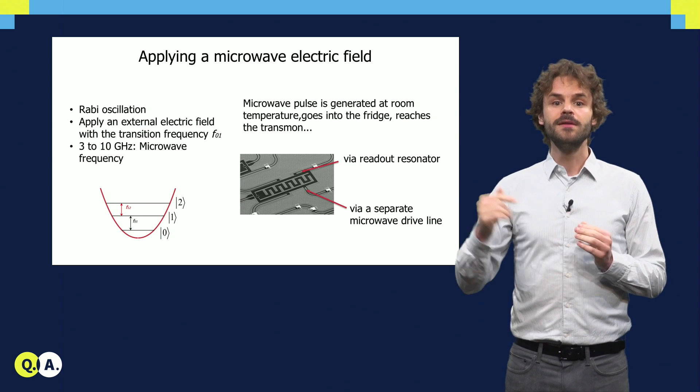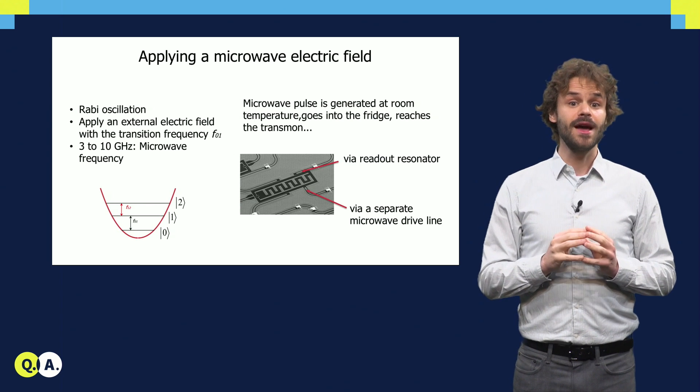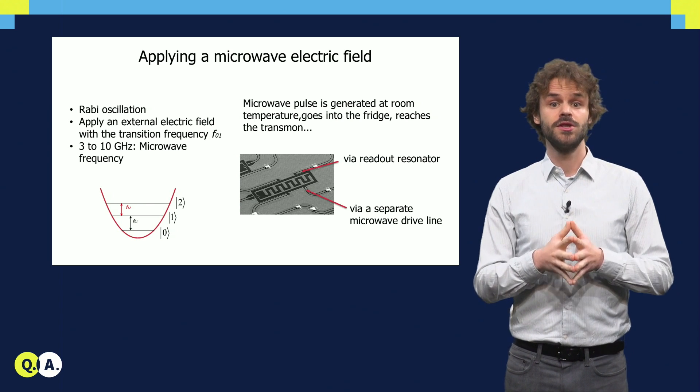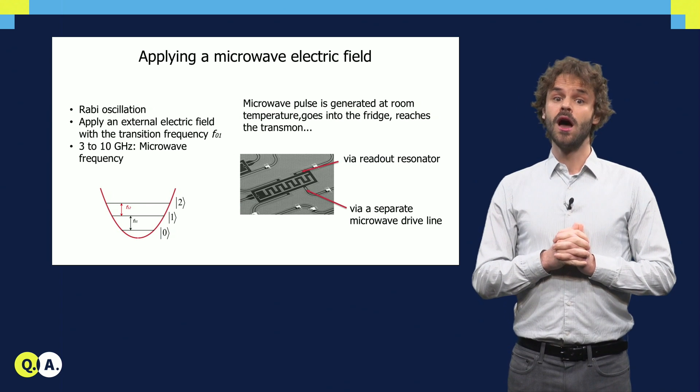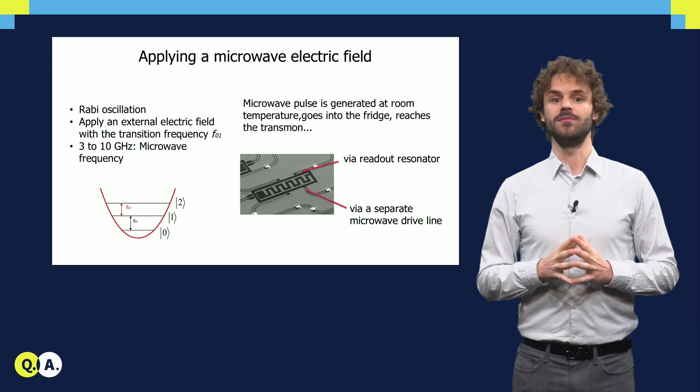To apply the electric field, we need a microwave line that ends next to the transmon. We can use the same line that is also used for measurements, about which you will hear more in the next videos. Or on larger devices with many qubits, we often make a dedicated drive line for each qubit.